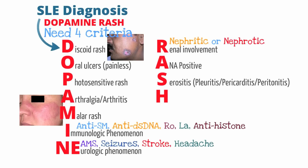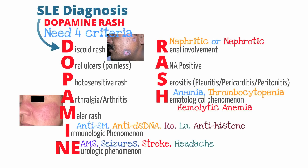Other symptoms seen in lupus include serositis, which includes pleuritis, pericarditis, and peritonitis. Finally, patients can have hematological phenomenon, including anemia, thrombocytopenia, and hemolytic anemia.